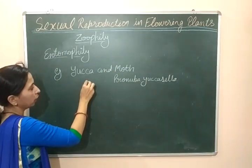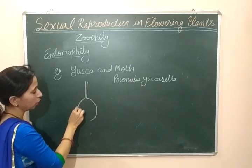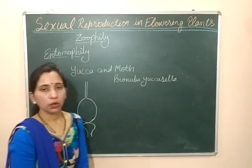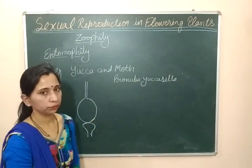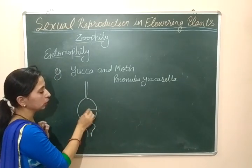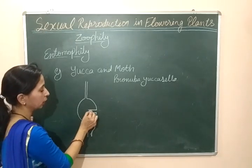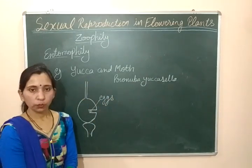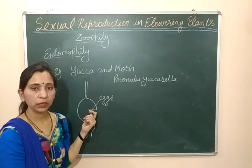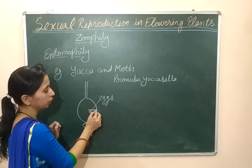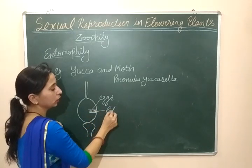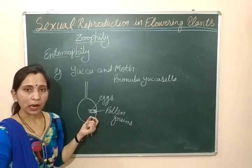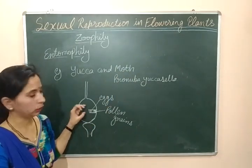Let's see how both of these get benefited. In the yucca flower, this is the ovary of the yucca flower. When the moth needs to lay its eggs, it makes a hole inside the ovary and lays its eggs there. These are the eggs of the yucca moth. Then it closes this hole by depositing pollen grains, which it brings from another flower.